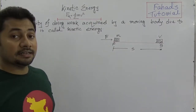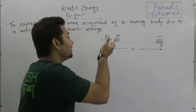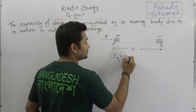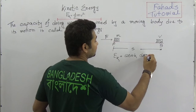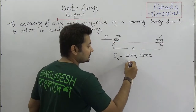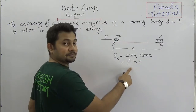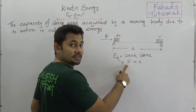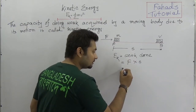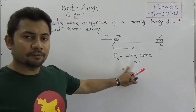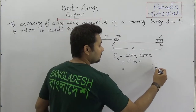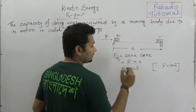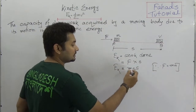What is the kinetic energy? The kinetic energy is acquired by the work done. Kinetic energy equals work done, which is force times displacement. We know that this displacement is S, and from the concept of force we know that F equals MA. So we can say EK equals MAS.